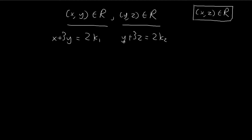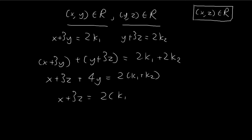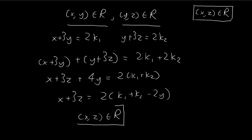Now we're going to add these two expressions together. On the left-hand side we have x plus 3y plus y plus 3z, and on the right-hand side we have 2k1 plus 2k2. Rearranging some of the terms, we get x plus 3z plus 4y is equal to 2 times (k1 plus k2). Then we subtract 4y from both sides, so we get x plus 3z is equal to 2 times (k1 plus k2 minus 2y). So x plus 3z is equal to 2 multiplied by some integer, which means the pair (x, z) must also be an element of R, because x plus 3z must also be even.